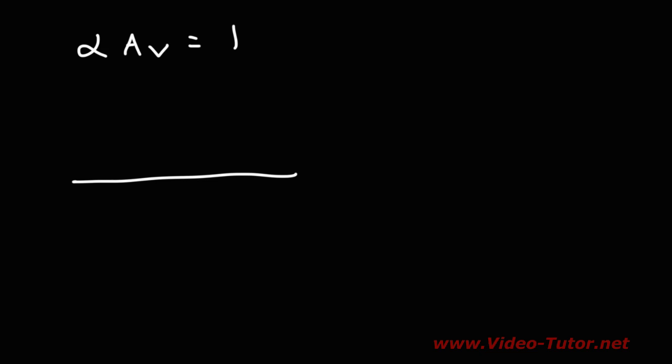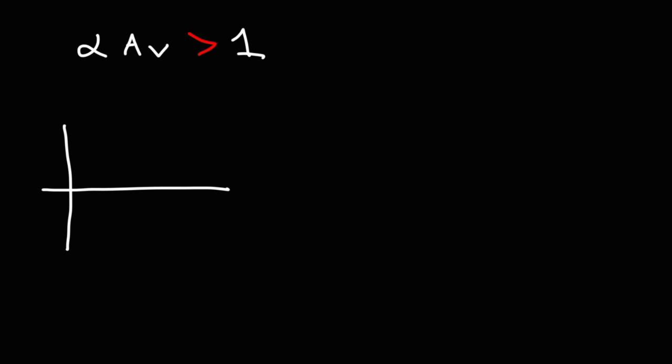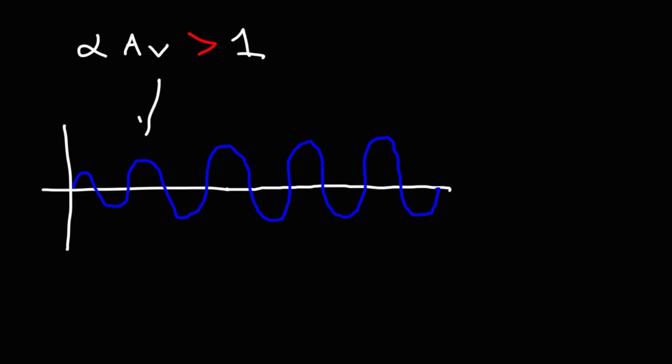Initially, everything must start from zero, so if you want your oscillator to function properly, you need the loop gain to be greater than one. The reason for that is to start the oscillations — as the amplitude builds, eventually it will reach its optimal point. At that point, you want the loop gain to be equal to one. So while the oscillations are growing, the loop gain needs to be greater than one, but once it reaches its optimal level, you want it to equal one.